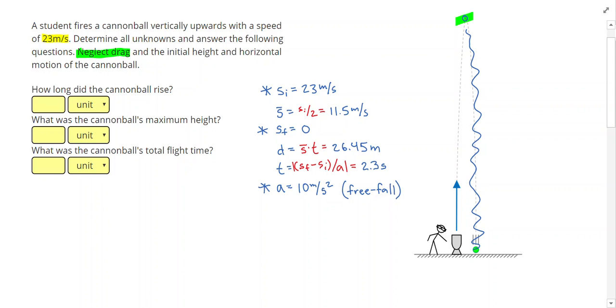All right, so it says, how long did the cannonball rise? Well, since I cut this problem in half, this 2.3 seconds was how long the cannonball took to reach the maximum height. So 2.3 seconds would be the rise time. The cannonball's maximum height, well, height is distance, and so that would give me 26.45 meters. I can always keep more than 3 sig figs, I could have rounded that to 26.5 as well. And lastly, the total flight time. If the cannonball took 2.3 seconds to rise, then the cannonball's going to take an additional 2.3 seconds to come back down, giving me a total of 2.3 times 2, or 4.6 seconds as my total flight time.